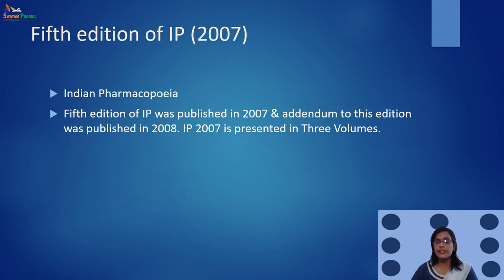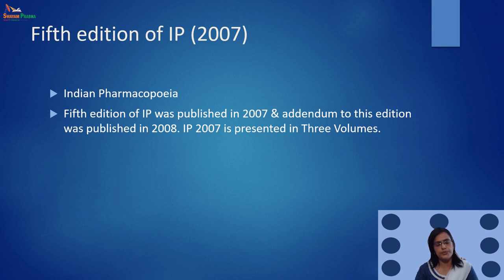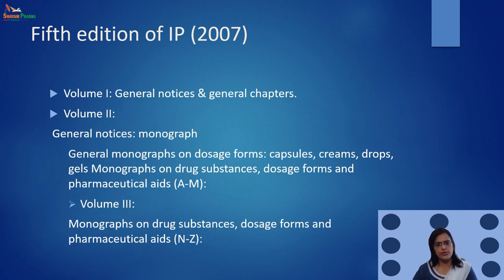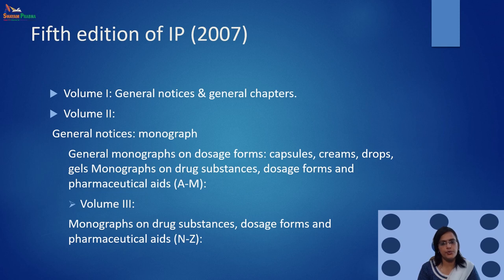The fifth edition of IP was introduced in 2007, and the addendum to this edition was published in 2008. It had three volumes: Volume 1 — general notices and general chapters; Volume 2 — different monographs from alphabet A to M; and Volume 3 — monographs of drug substances and dosage forms from N to Z.